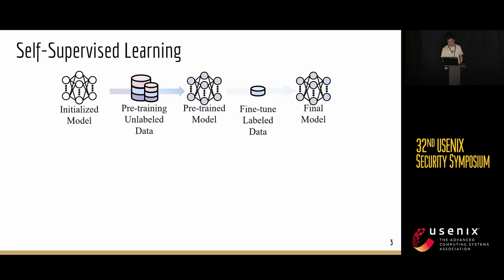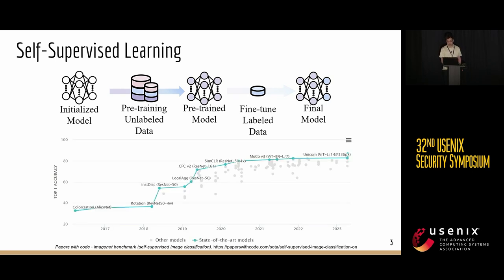In self-supervised learning, the model is first pre-trained on unlabeled data to gather feature representations and then fine-tuned using a smaller labeled dataset. This training paradigm drastically reduces the reliance on large labeled datasets. In recent years, SSL has achieved remarkable strides in performance. As demonstrated in this chart, SSL-trained model accuracy on the ImageNet-1K classification task has improved from the mid-50s to almost 90% in the past four years.